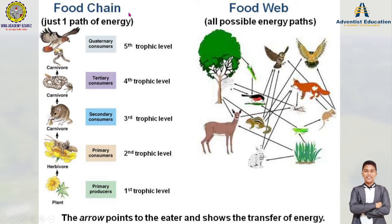The higher the trophic level, the very little energy you can receive. Imagine being at the sixth, seventh, eighth, or tenth trophic level — there is barely any energy left. When we are at the second trophic level, we benefit directly from the first trophic level, which is the producers.